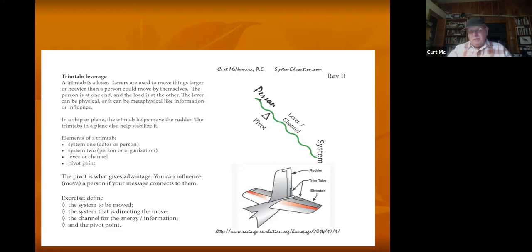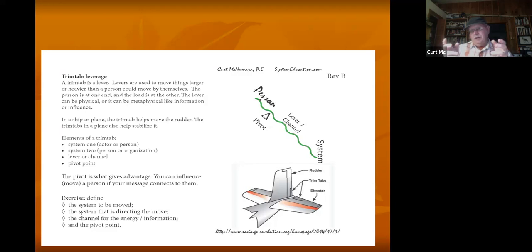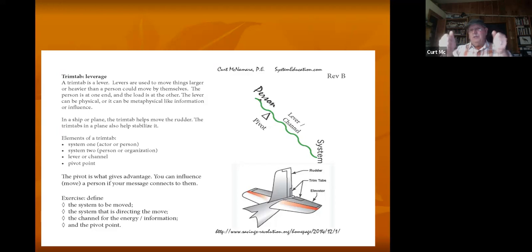These are trim tabs on an airplane — on the rudder and control surfaces. The flaps on airplane wings are also trim tabs. In older planes, pilots literally moved cables controlling the control surfaces with their hands. In turbulence, it was really hard to control the plane. Once trim tabs were added, the pilot could now control it by adjusting just the small trim tab, which itself adjusts the control surface. The biggest effect in many ways was to allow the pilot to fly more easily.